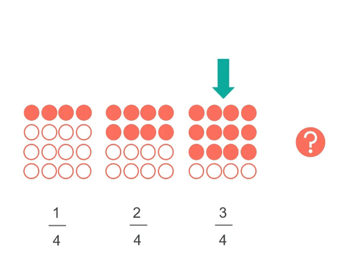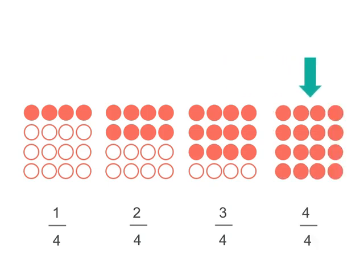3 shaded rows out of 4. So our final picture will have 4 rows out of 4, but our fraction will be 4 quarters.